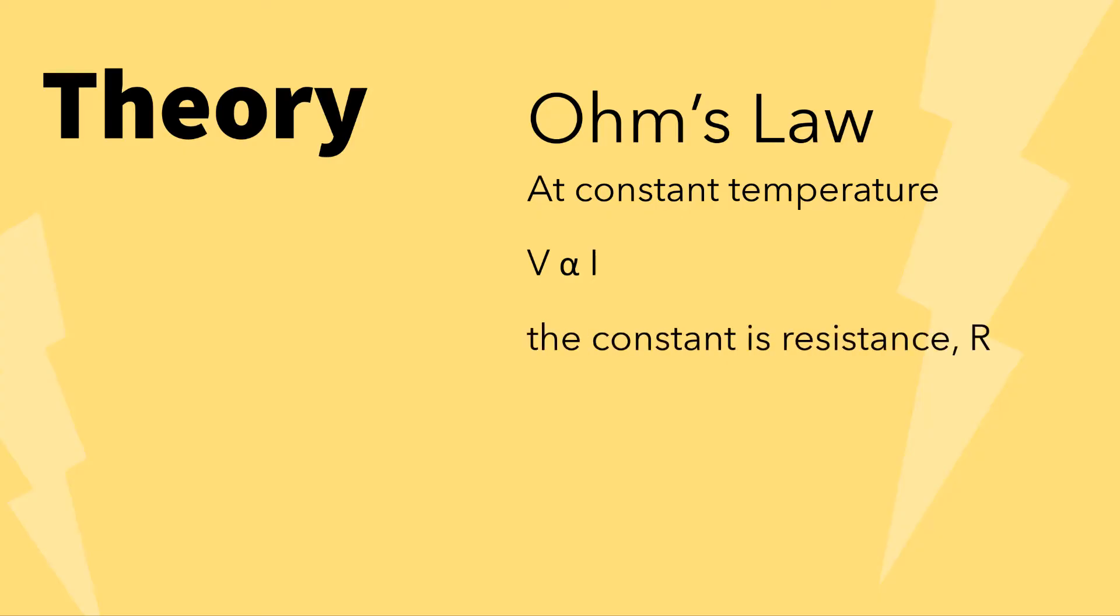Before we go to the experiment, let's take a look at the theory. At constant temperature, the potential difference V across a conductor is directly proportional to the current I that flows through it. To get the equation, the constant is the resistance R. Hence, mathematically, V equals IR.